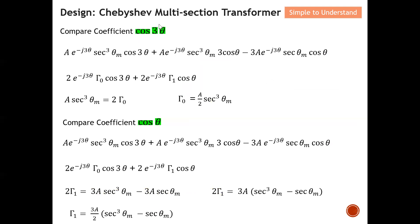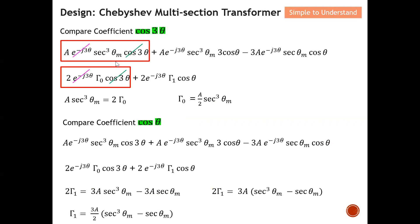I compare coefficients using the cosine 3-theta term. I box up the two corresponding terms from each equation, cross out all common terms, and what remains gives me: reflection coefficient zero equals 'a' divided by 2 times sec(3θ_m). This is the equation that allows me to find the reflection coefficient at zero.